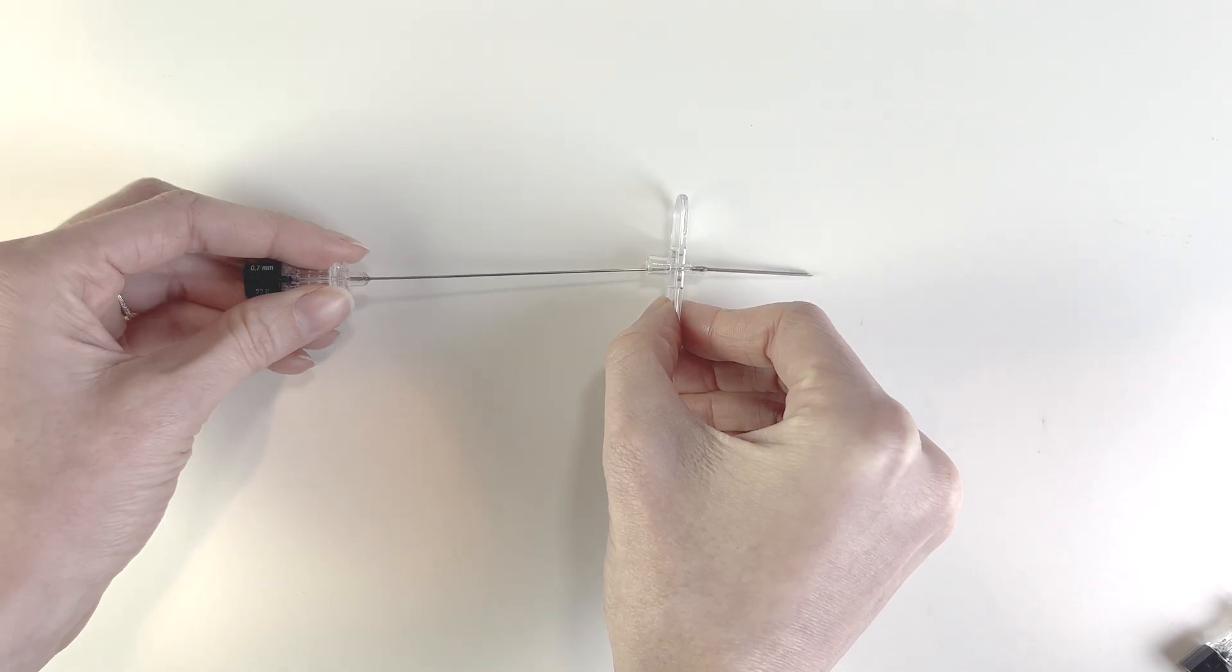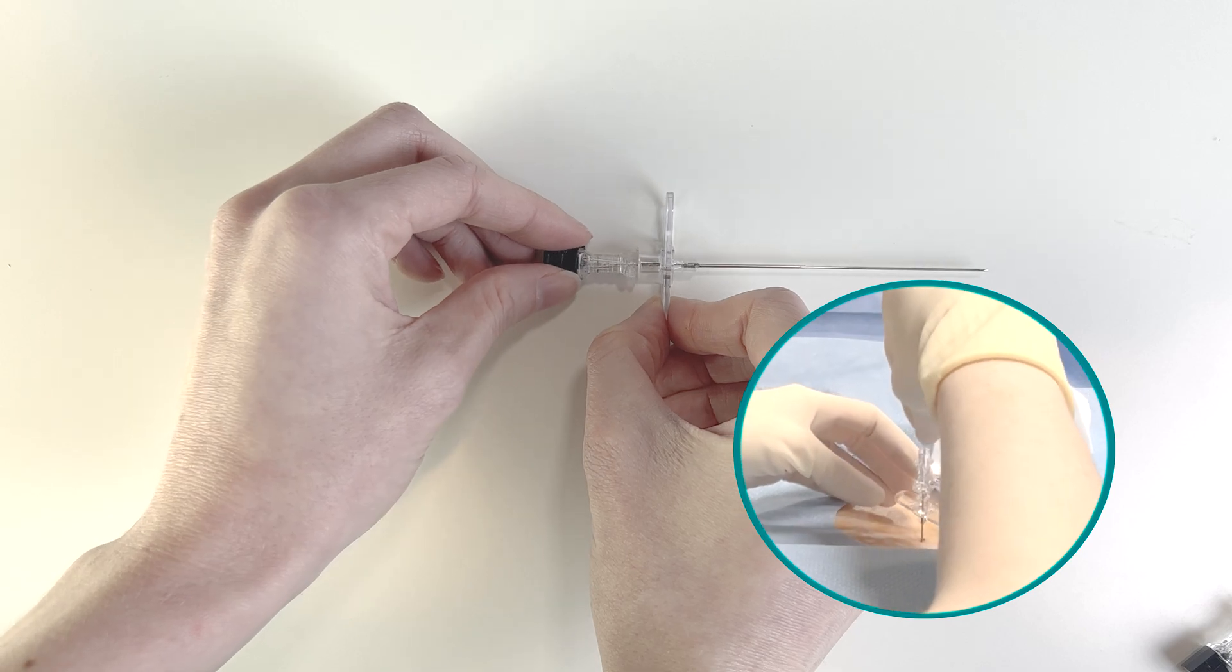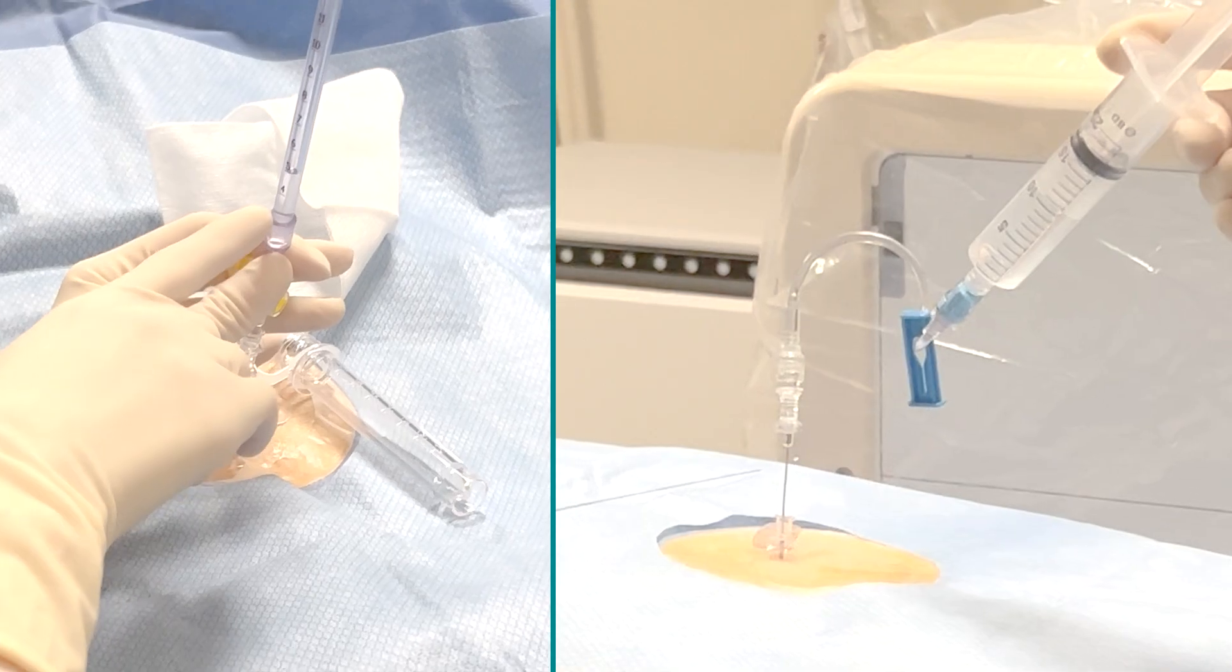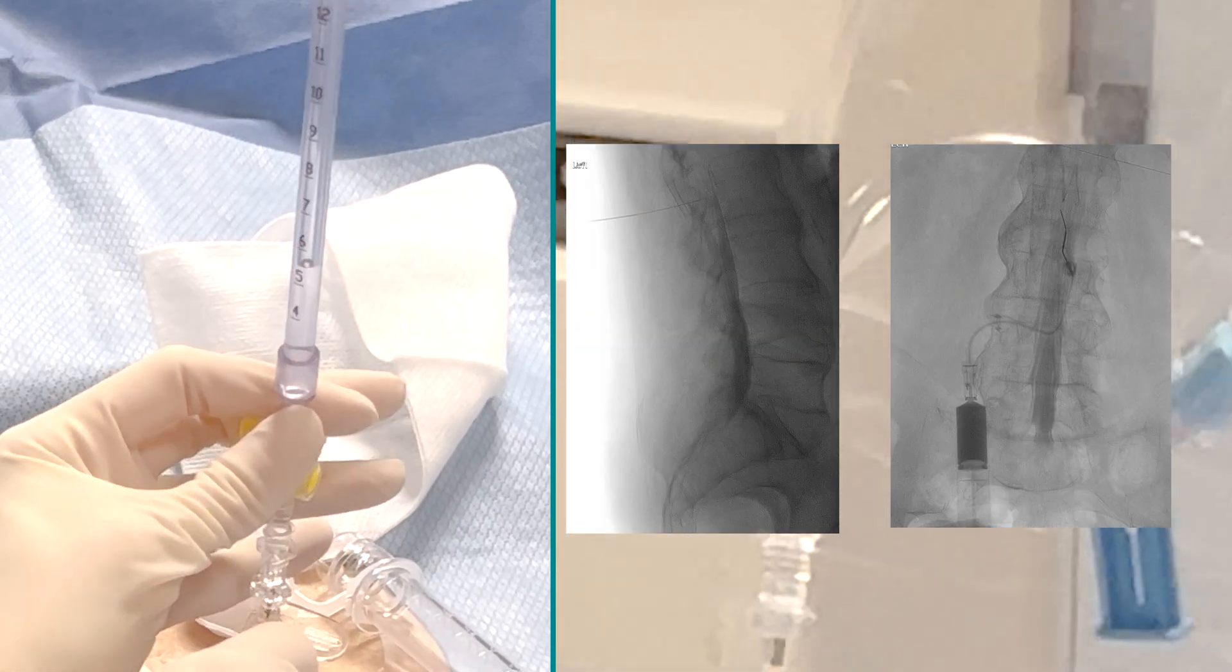Once you're satisfied with your angle of entry, you put your atraumatic needle through the introducer and remove the stylet to expose the little side port so the CSF can exit. At this point, you could just do whatever you normally do, whether it's getting a pressure measurement or injecting some contrast.